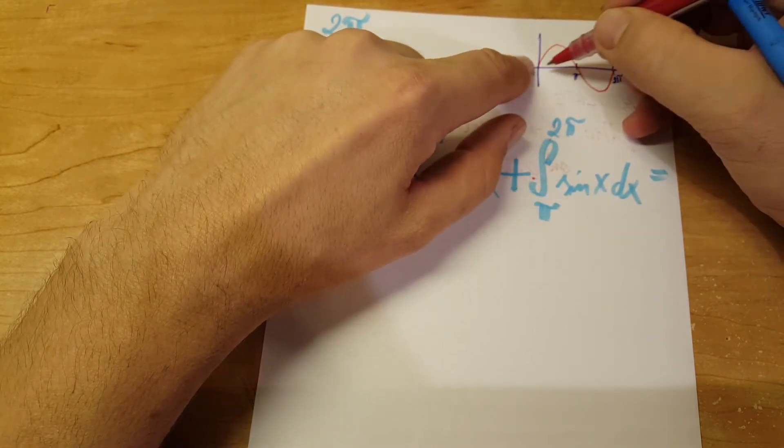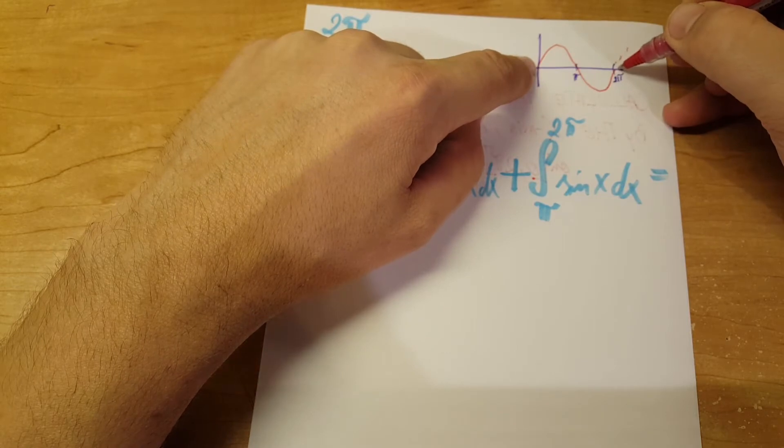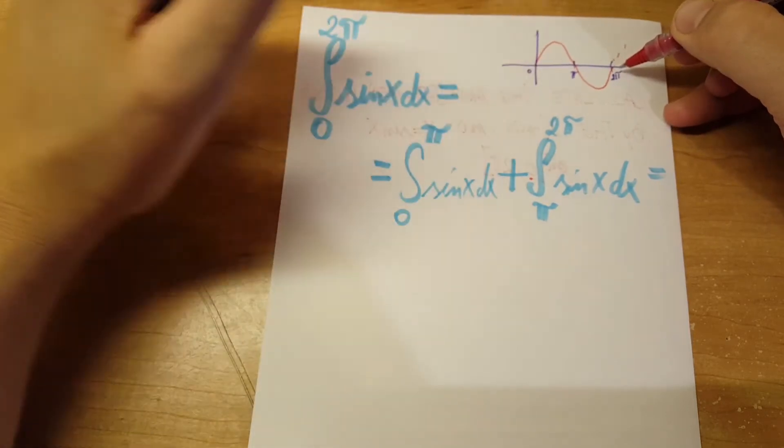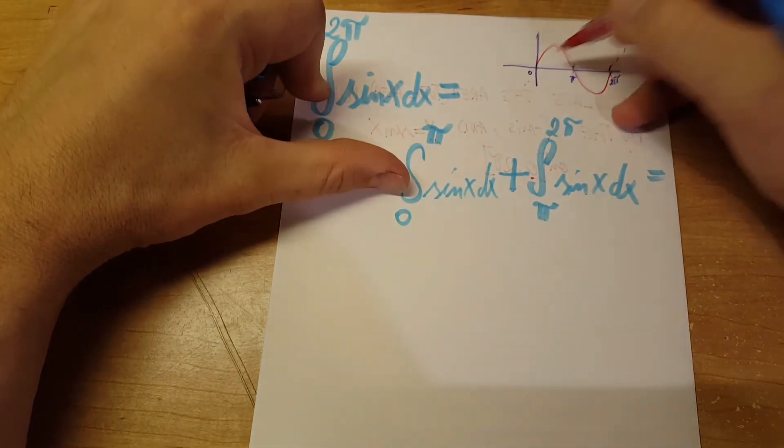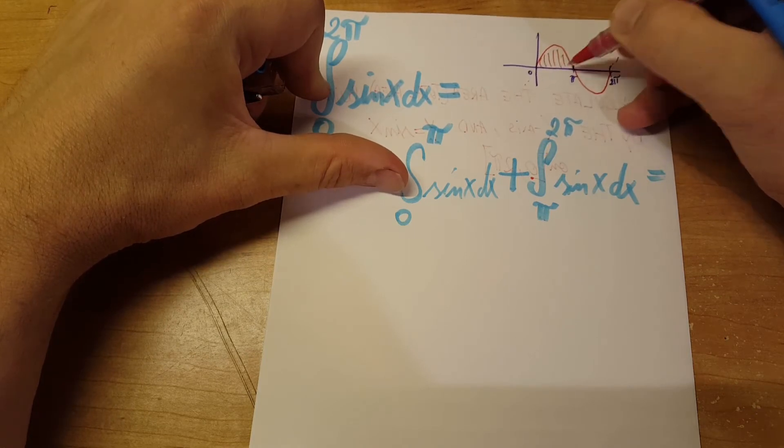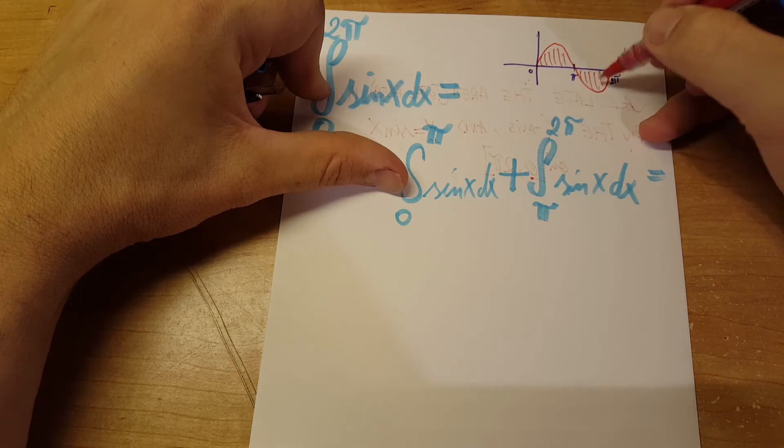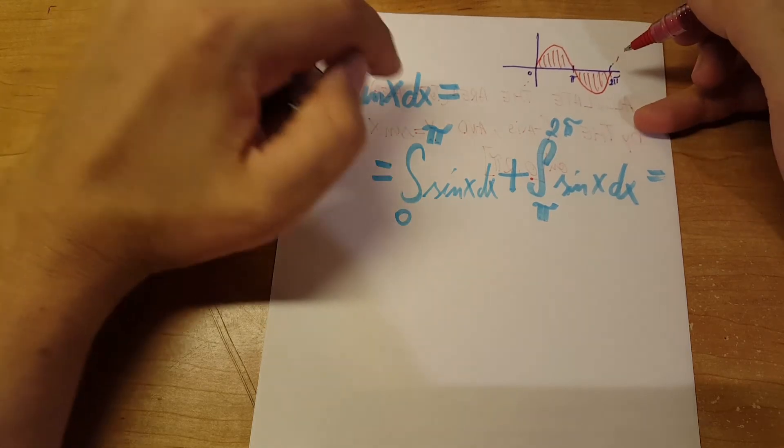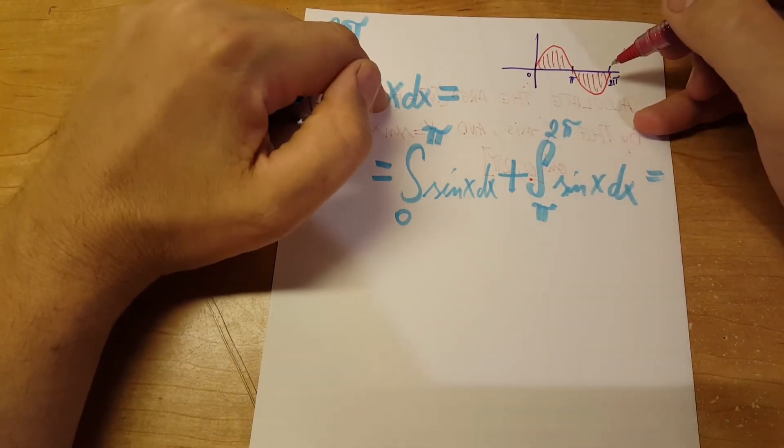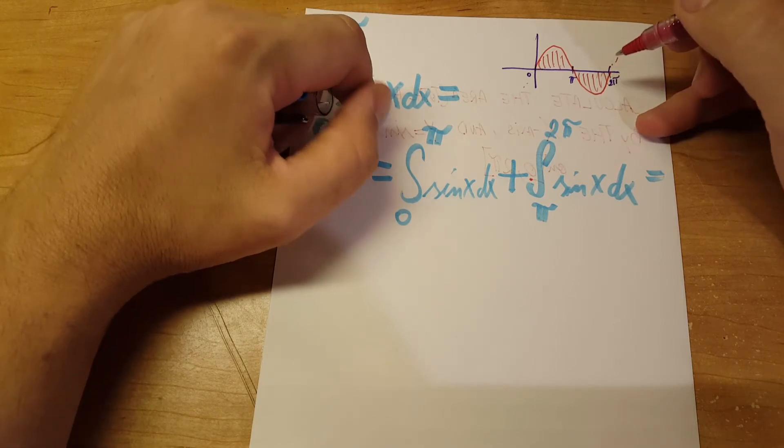This is the area that we're interested in from zero to two pi. If we leave it like this, we're gonna get the net area, which is this plus this - positive and negative. Since they are equal in size, the net area will be zero, but we want the total area.